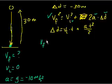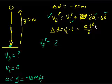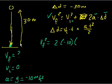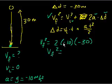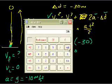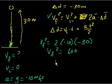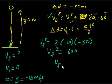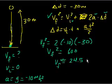So we get vf² = vi², which is just 0, plus 2 times acceleration, which is minus 10, times the distance, which is minus 30. So vf² = 10 × 30 × 2 = 600. Taking the square root of 600 gives roughly 24.5 meters per second. So vf = 24.5 meters per second.